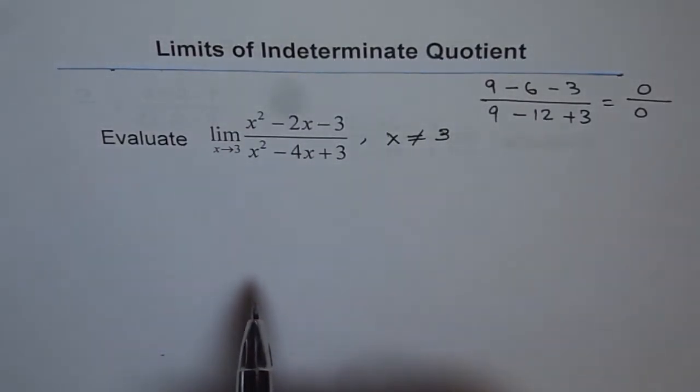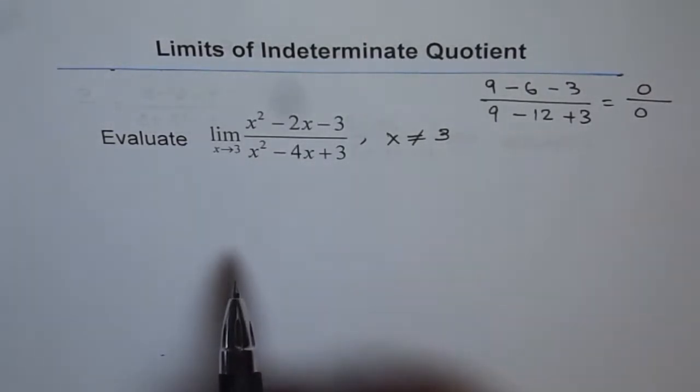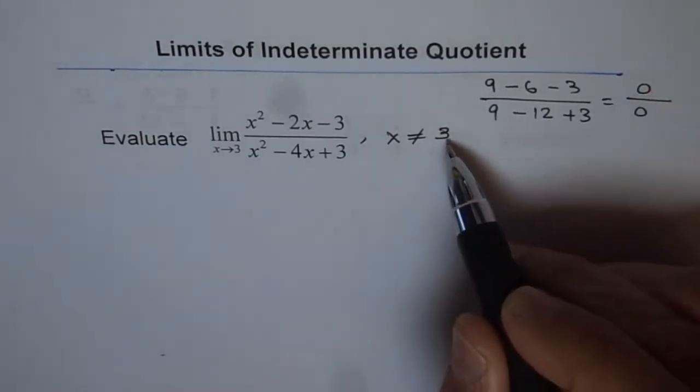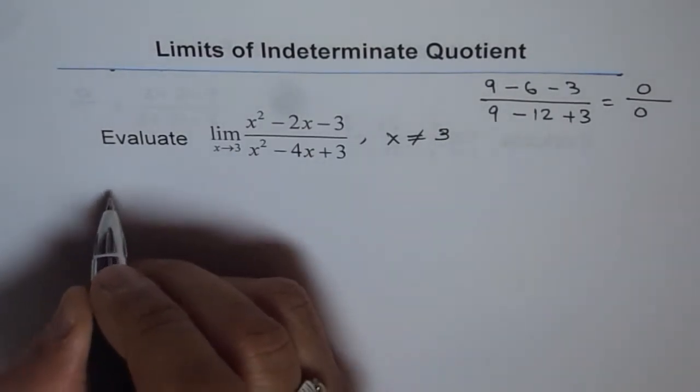Now both numerator and denominator should have x minus 3 as their factor, since we are getting 0 after substituting 3, right? So, let's factor it out, and then solve for limit.